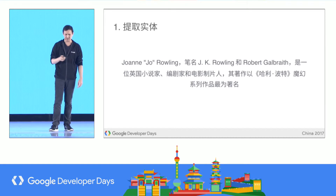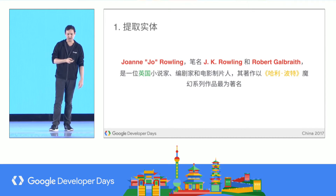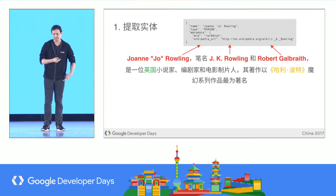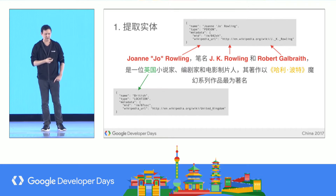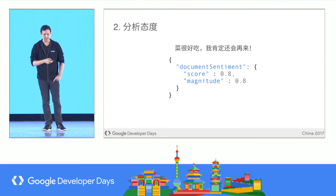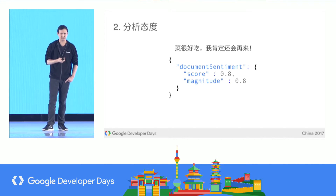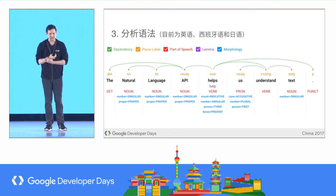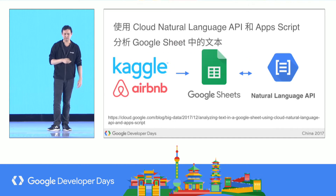We can also extract entities — for example, figuring out that JK Rowling, Robert Galbraith, and Joanne Rowling are all the same person, and providing the Wikipedia URL that refers to her, the author of Harry Potter. We can figure out that 'British' is an adjective corresponding to the location Great Britain, and that we're talking about the literary work Harry Potter. Sentiment extraction gives both a score and a magnitude — the score indicates whether the expression is positive or negative on a scale of negative one to one, and magnitude from zero to one indicates how important that sentiment is to the overall context. Syntax extraction is available for a limited set of languages.